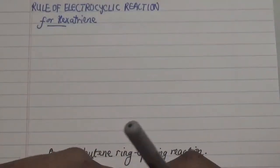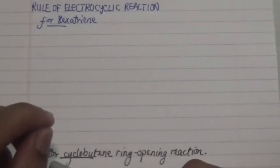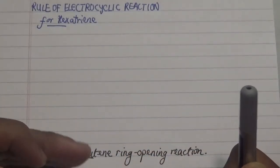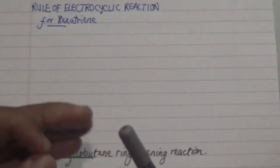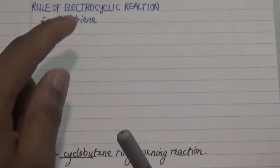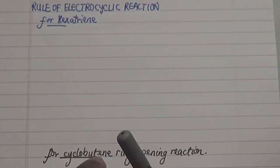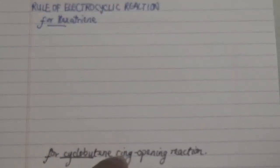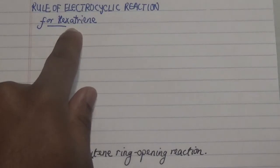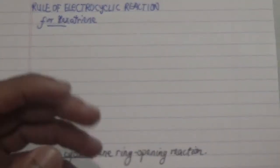Hello everyone, welcome to my channel. So excited to be back again to talk about one of the most interesting rules applied in electrocyclic reactions. This involves two reagents: hexatriene and cyclobutene. We're going to focus on the ring opening of cyclobutene and the ring formation from hexatriene, taking into account various rules.